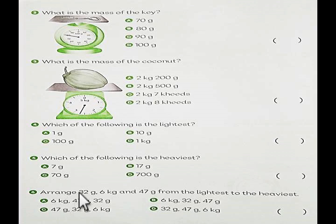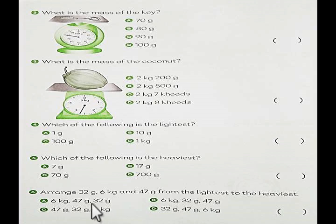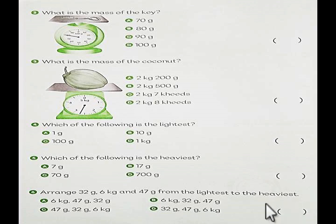Number 6. Arrange 32 grams, 6 kilograms, and 42 grams from the lightest to the heaviest. Which arrangement is correct — A, B, C, or D? For example, the eraser is the lightest. So which here is lightest to heaviest? Choose A, B, C, or D.